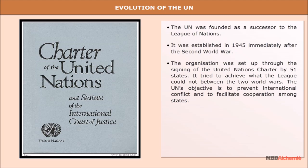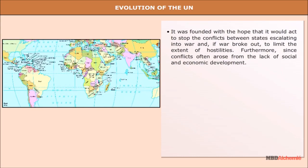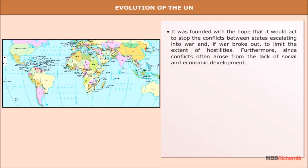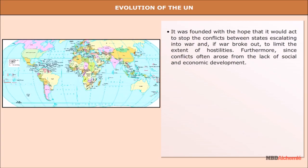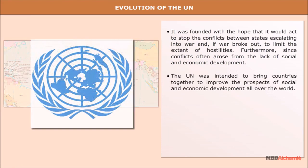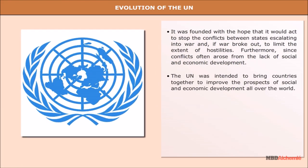The UN's objective is to prevent international conflict and to facilitate cooperation among states. It was founded with the hope that it would act to stop the conflicts between states escalating into war and, if war broke out, to limit the extent of hostilities. Furthermore, since conflicts often arose from the lack of social and economic development, the UN was intended to bring countries together to improve the prospects of social and economic development all over the world.